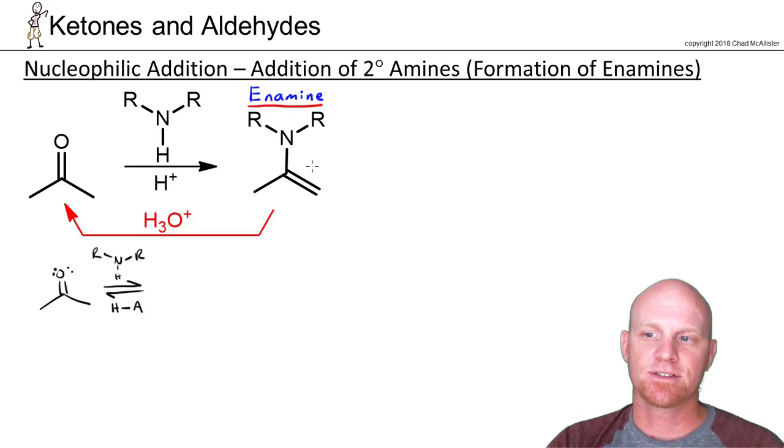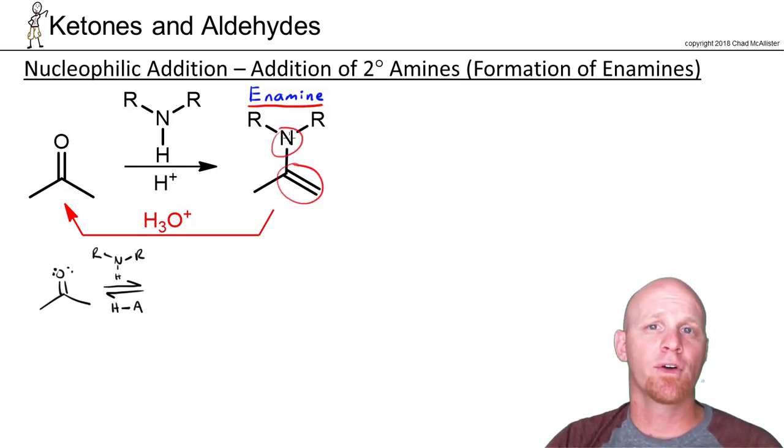The reason it's called an enamine is that you have both an alkene and an amine on the same molecule at the same position. So hence the name enamine, alkene amine.